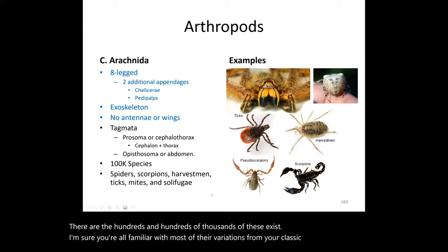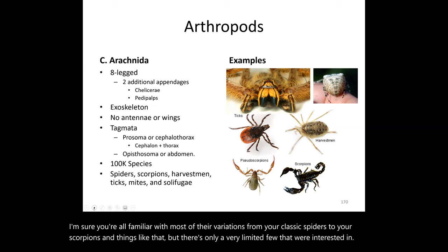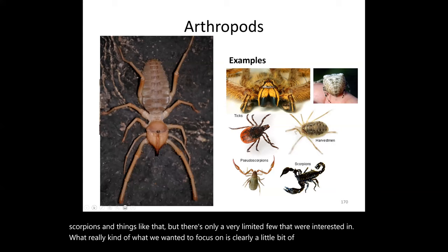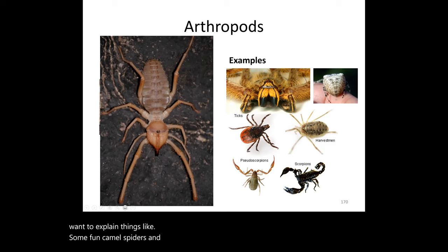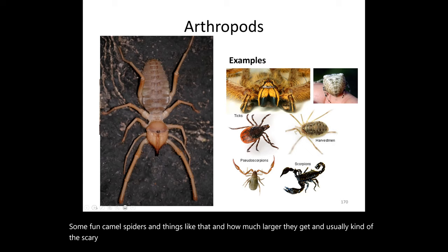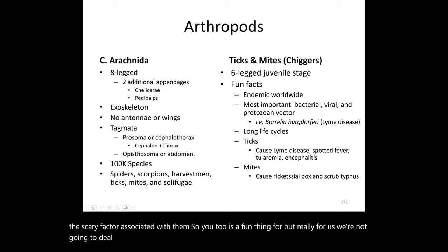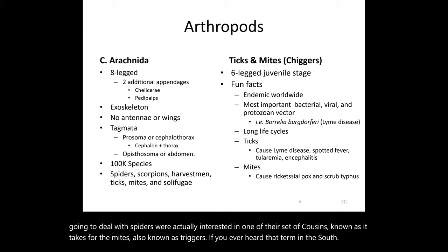Out of the hundreds of thousands of arachnid species — from classic spiders to scorpions — only a very limited few are of medical interest to us. We're actually most interested in one group of their cousins: ticks and mites, also known as chiggers if you've heard that term used in the south.